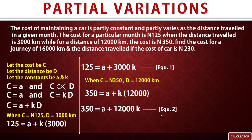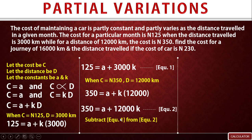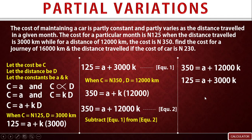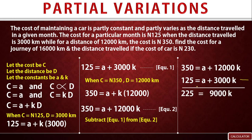To solve simultaneously, we subtract equation one from equation two. Placing equation two on top and equation one below, we cancel out A since it appears in both equations. Subtracting: 350 minus 125 gives 225, and 12,000k minus 3,000k gives 9,000k. So 225 equals 9,000k. To make k the subject, we divide both sides by 9,000 — the coefficient of k.